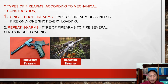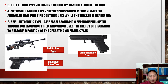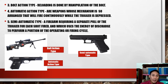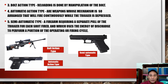Next is bolt action type — reloading is done by manipulation of the bolt. Usually seen in rifles: the bolt is located at a specific part of the firearm, and the ammunition is placed there. After firing, the bolt is manipulated to eject and reload.